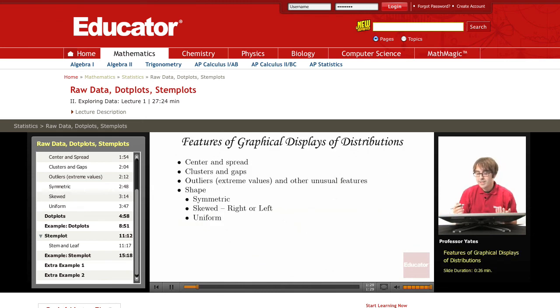Often when we have raw data, what we want to do is try and summarize it in some shape or form. So what we're going to be looking at are some ways to graphically display these distributions of the data. The first thing is we want to try and make a guess at what the center and the spread of that distribution is going to be.